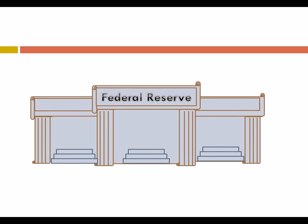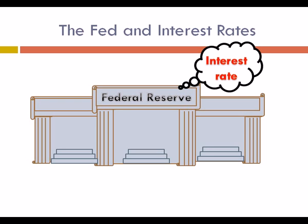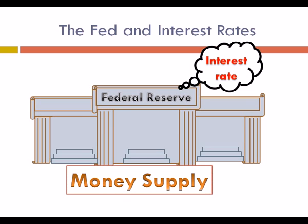But how are interest rates determined? This is where the Federal Reserve comes in. The Federal Reserve Bank is a central banking system that sets the monetary policy in the United States. One thing they are in charge of is influencing the direction of interest rates, and a way they do this is through changing the money supply.